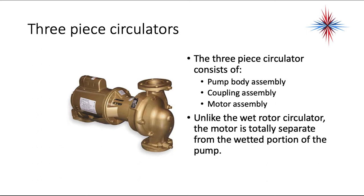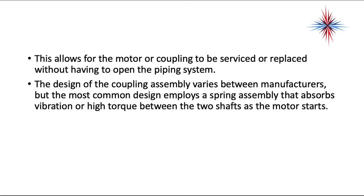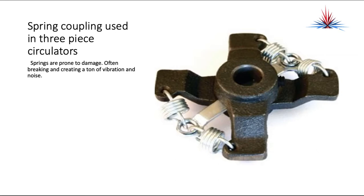The three-piece circulator consists of a pump body, a coupling assembly, and a motor assembly. Unlike the wet rotor, the motor is totally separate from the wetted portion, allowing the motor and coupling to be serviced or replaced without opening the piping system. The most common coupling design employs a spring assembly that absorbs vibration and high torque during motor startup. Springs are prone to damage — they can break and create vibration and noise — but they're easy to replace because you don't have to drain the system.